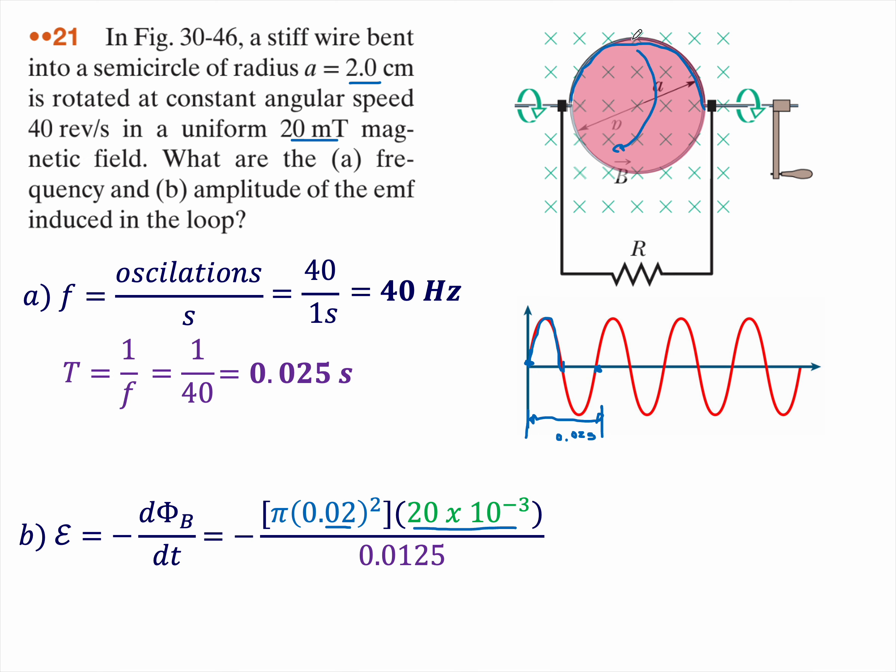And now here's the critical part. I just want the change in flux when the wire goes from here to here. That's going to be half of this time that I just found. So instead of 0.025, it's 0.0125 seconds. That's just the time required to go from here to here, not all the way back again.